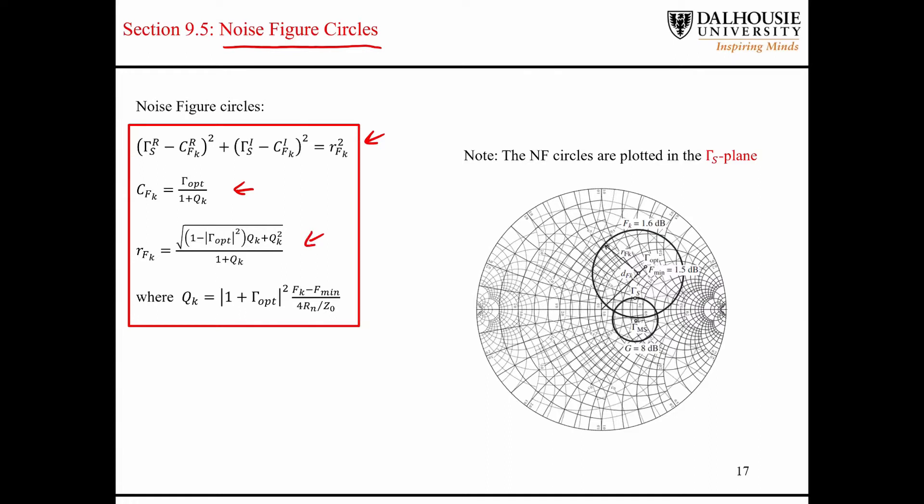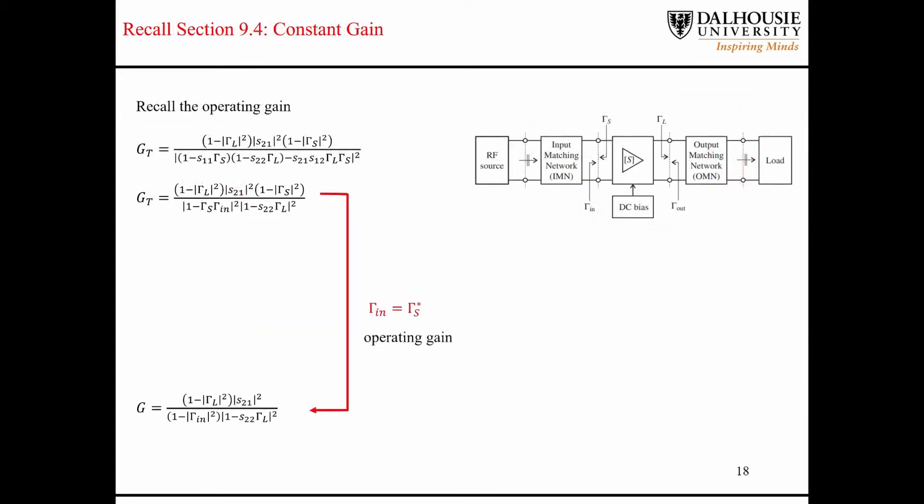It's very important to point out that these circles are plotted in the gamma s plane. Remember that gamma s is the impedance or the reflection coefficient seen looking into the input matching network from the point of view of the amplifier stage, so this would be gamma n here. I keep stressing the fact that the noise figure circles are plotted in the gamma s plane.